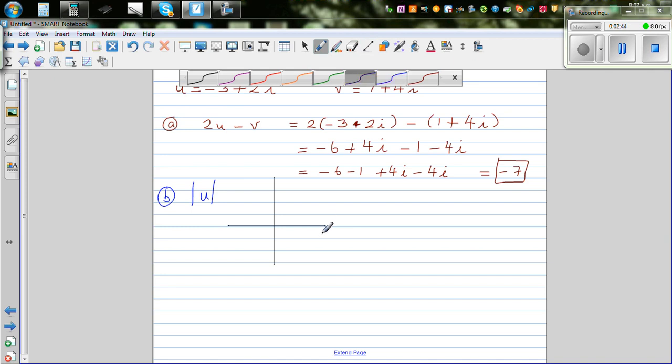This is your real axis and this is your imaginary axis. For u which is minus 3 plus 2i, the real part is minus 3 on the x-axis, and 2i on the imaginary axis. So this point at minus 3 plus 2i is the complex number.